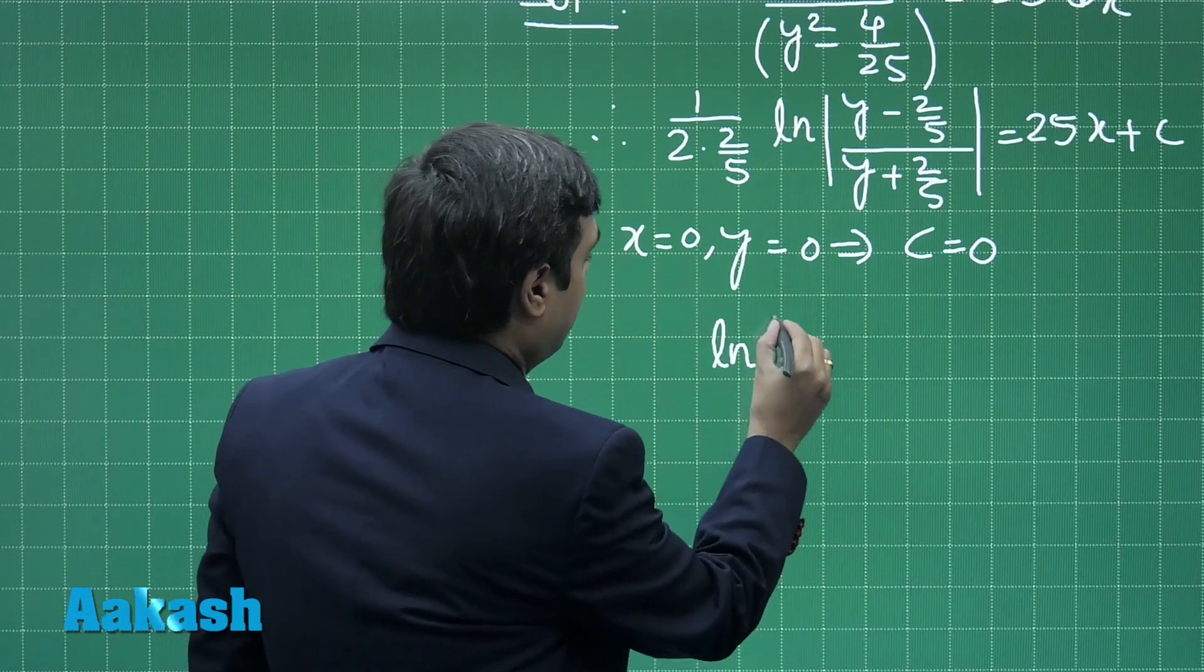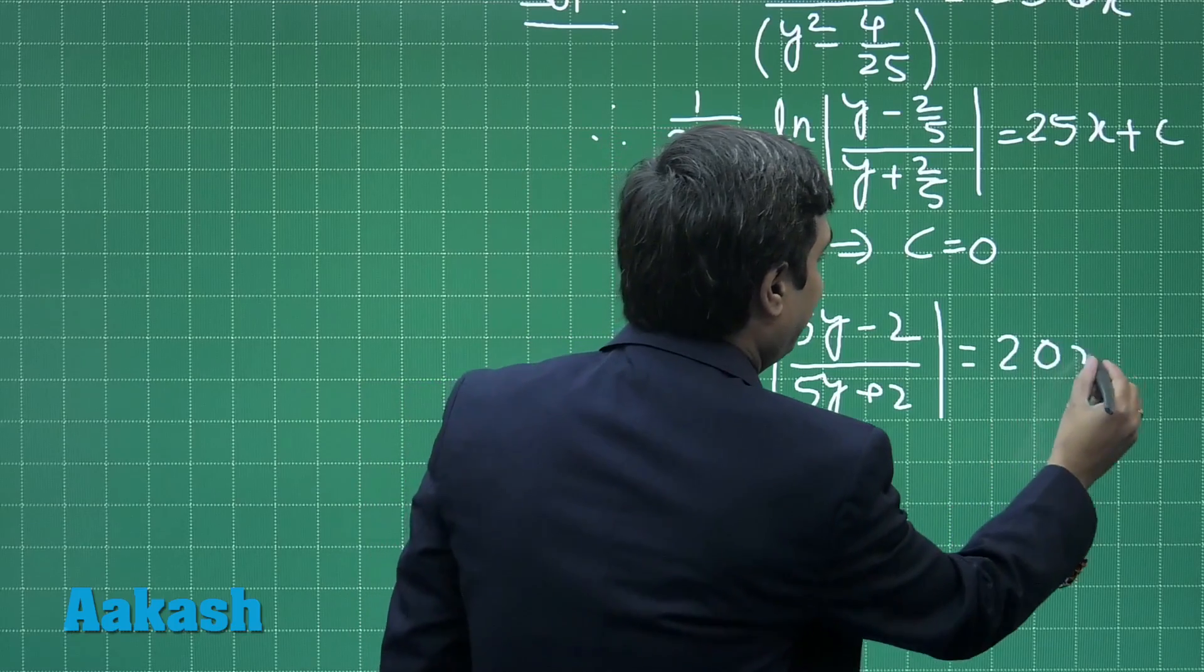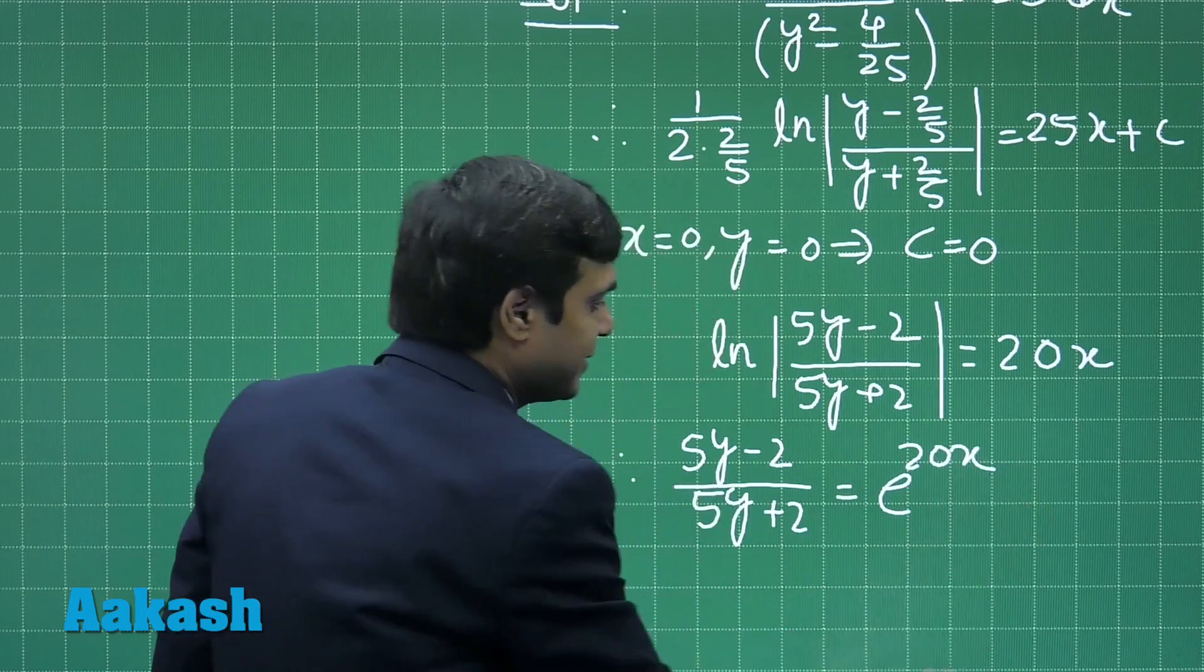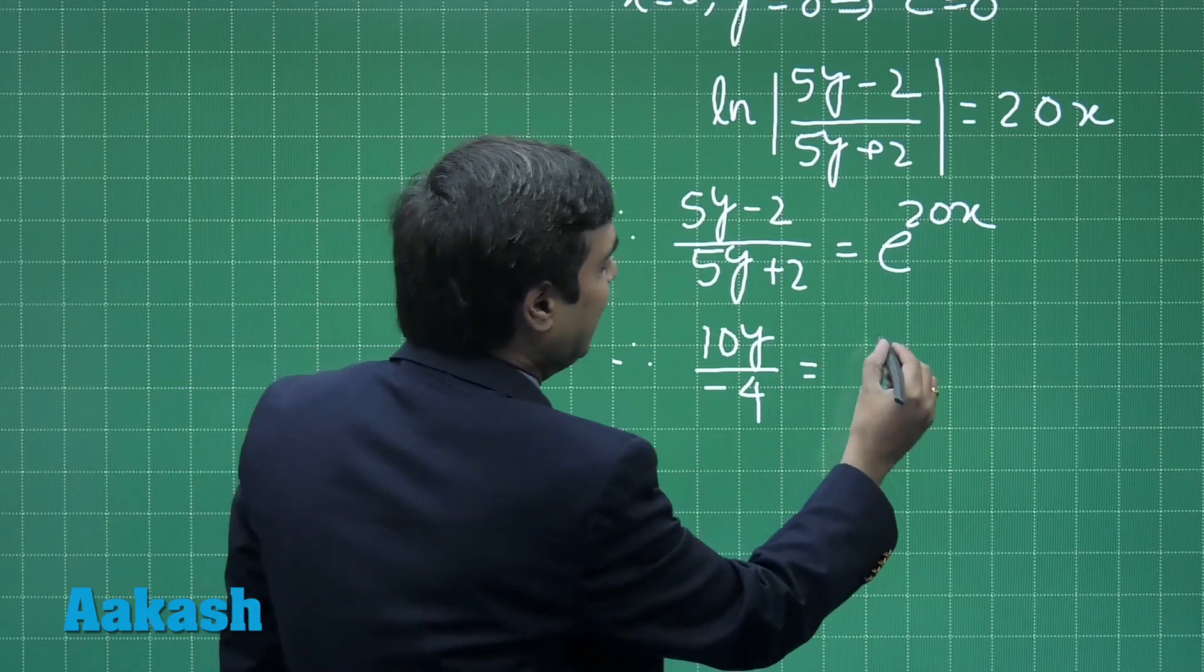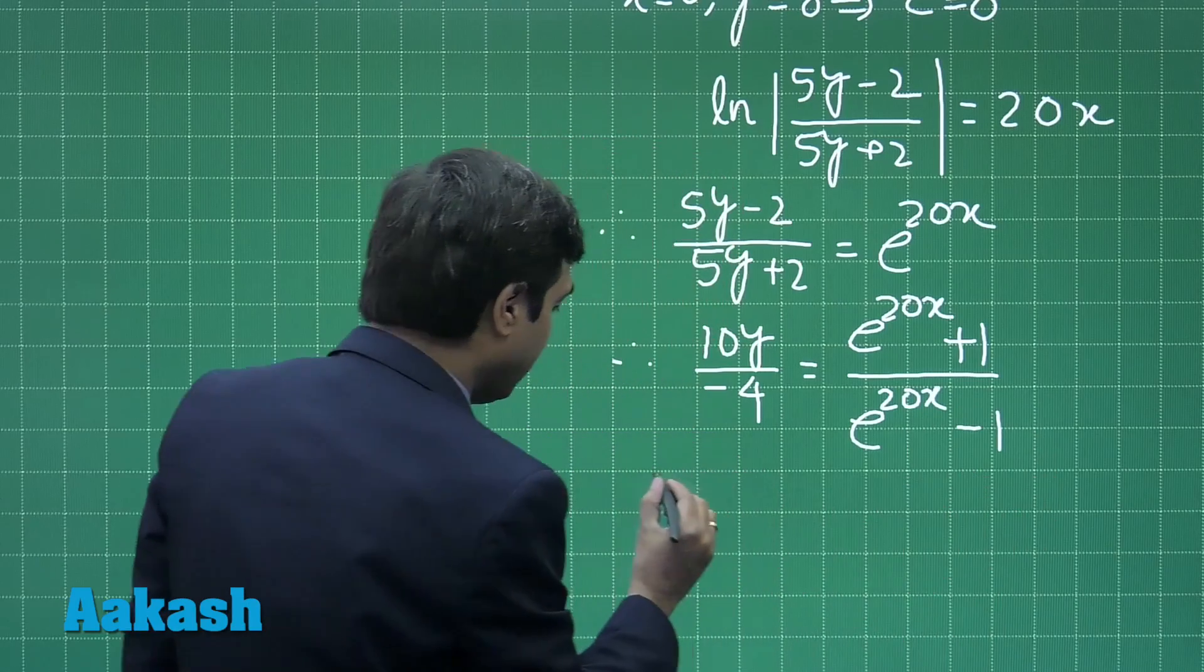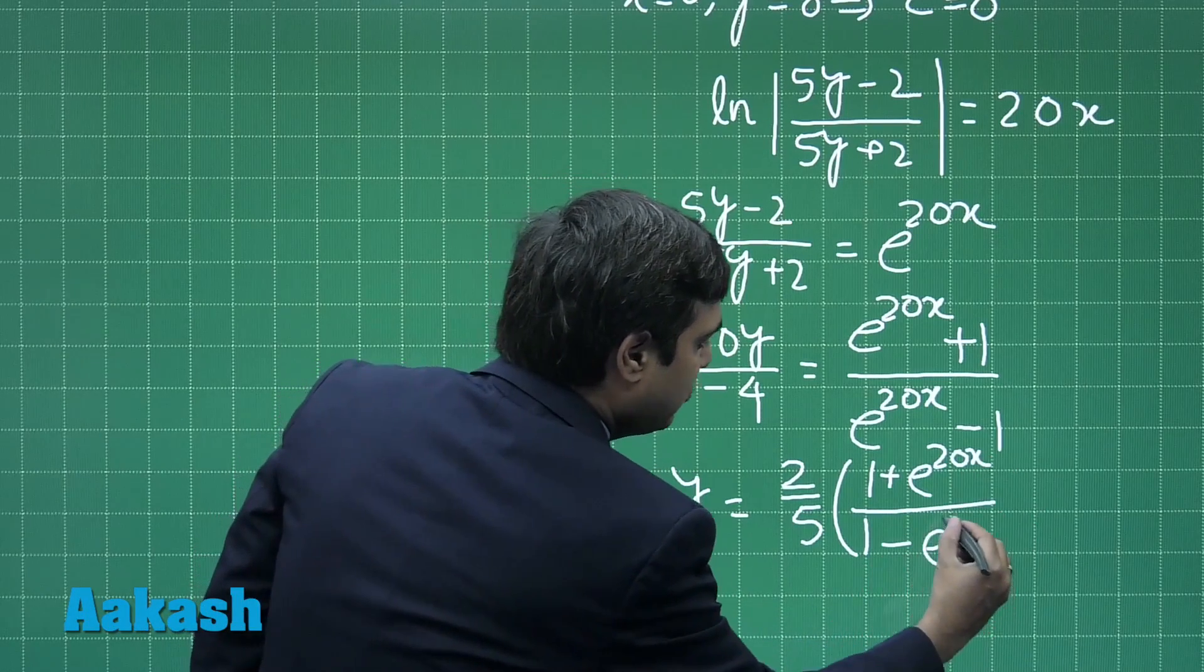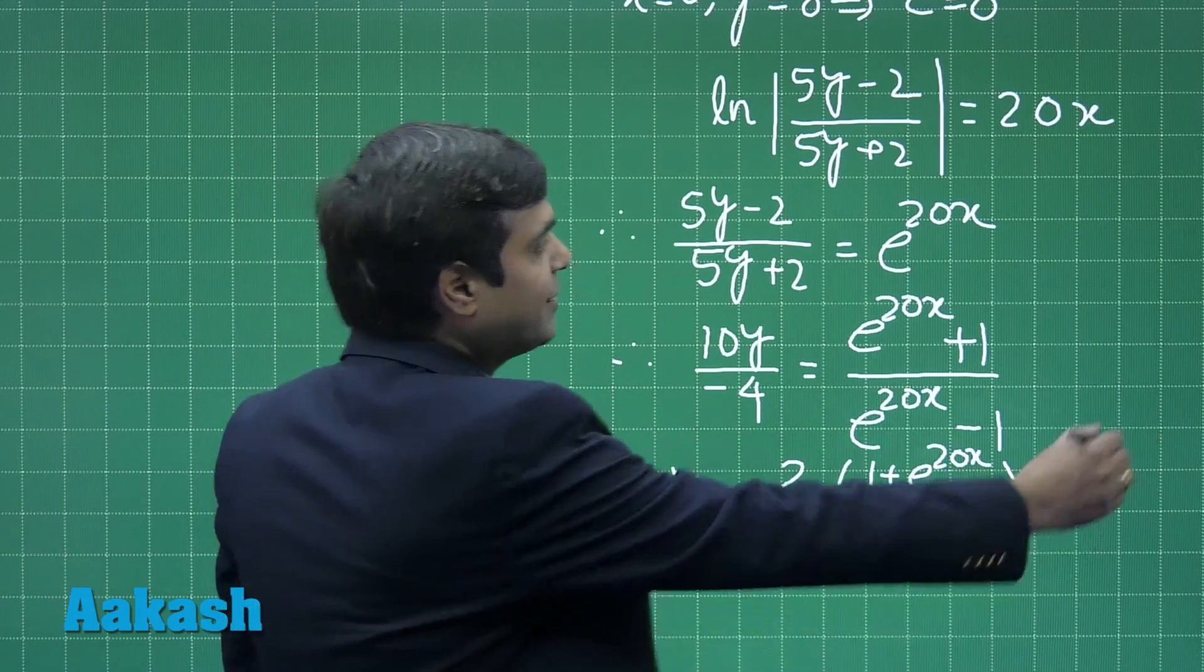We have the function changing to log (5y - 2) divided by (5y + 2) equals 20x, which can be written as (5y - 2)/(5y + 2) equals e to the power 20x. Simplifying, y equals 2/5 times (1 + e^(20x))/(e^(20x) - 1) or y equals 2/5 times (1 + e^(20x)).